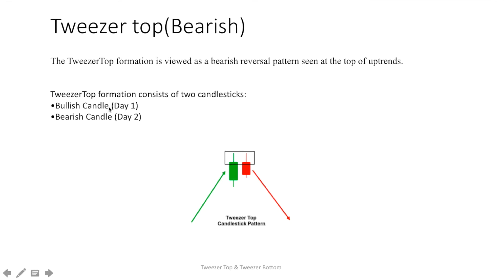Day 1 is a bullish candle and day 2 is a bearish candle. As shown in the figure, day 1 is a bullish candle and day 2 is a bearish candle. In this tweezers top, the close of the first day candle is equal to the open of the day 2 candle, and they have almost equal highs.